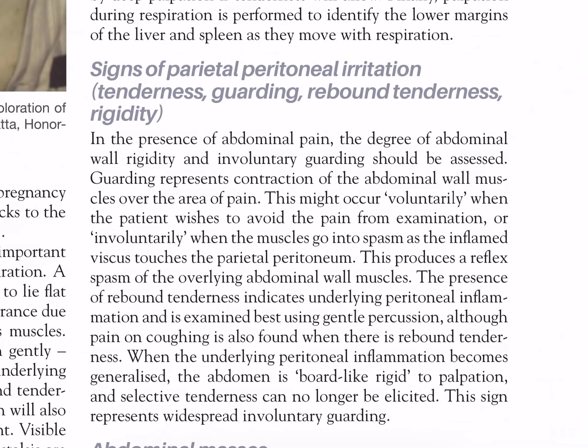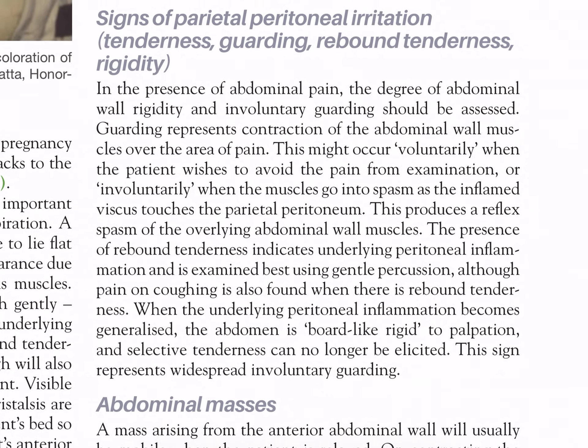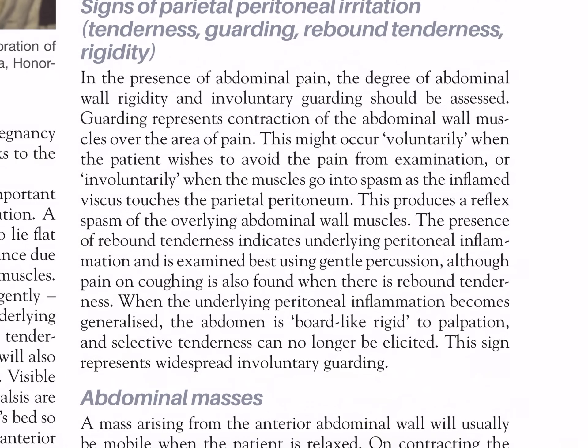In the presence of abdominal pain, the degree of abdominal wall rigidity and involuntary guarding should be assessed. Guarding represents contraction of the abdominal wall muscles over the area of pain — this might occur voluntarily when the patient wishes to avoid pain, or involuntarily when the muscles go into spasm as the inflamed viscus touches the parietal peritoneum, producing a reflex spasm of the overlying abdominal wall muscles. The presence of rebound tenderness indicates underlying peritoneal inflammation and is best examined using gentle percussion. When the underlying peritoneal inflammation becomes generalized, the abdomen is board-like rigid to palpation and selective tenderness can no longer be elicited — this sign represents widespread involuntary guarding.